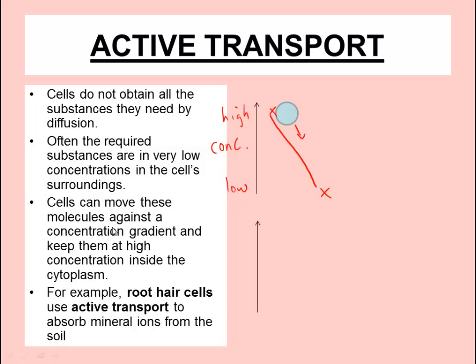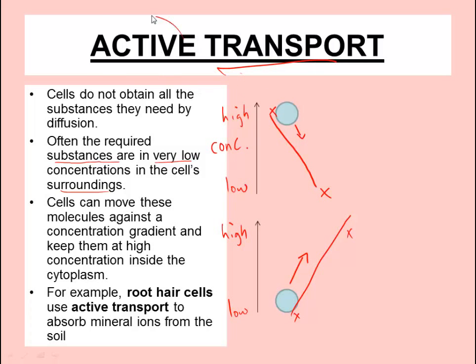That's fine, but very often that isn't the case. Sometimes the substances that you need are in a very low concentration surrounding the cell. What cells can do in that situation is move these particles uphill against a concentration gradient. We have our axis with concentration low down here and high here, and we're moving the football from low concentration to high concentration — pushing it uphill requires extra energy input, whereas in diffusion no energy input is required. This type of transport is active.